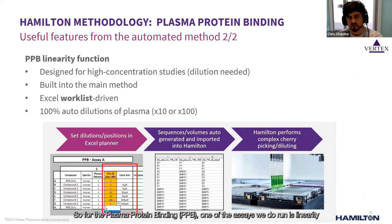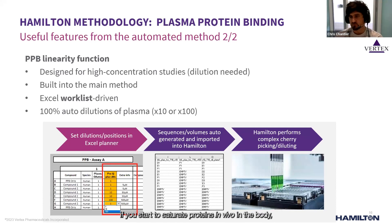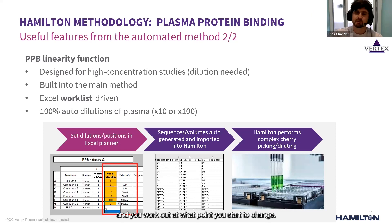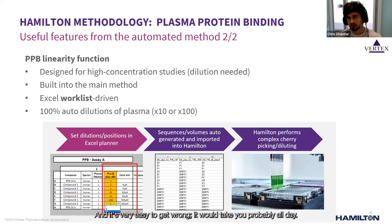For plasma protein binding, one assay we run is the linearity assay, where you establish at what compound concentration you actually saturate the plasma proteins. This is important because if you saturate proteins in vivo you get unpredictable pharmacokinetics. Running different concentrations manually and cherry-picking dilutions to avoid saturating the mass spectrometer would take all day and is very error-prone, making this highly amenable to a worklist-based automated setup.